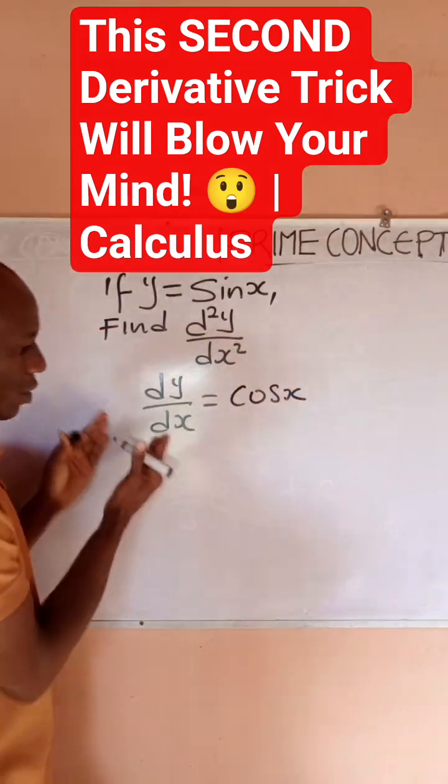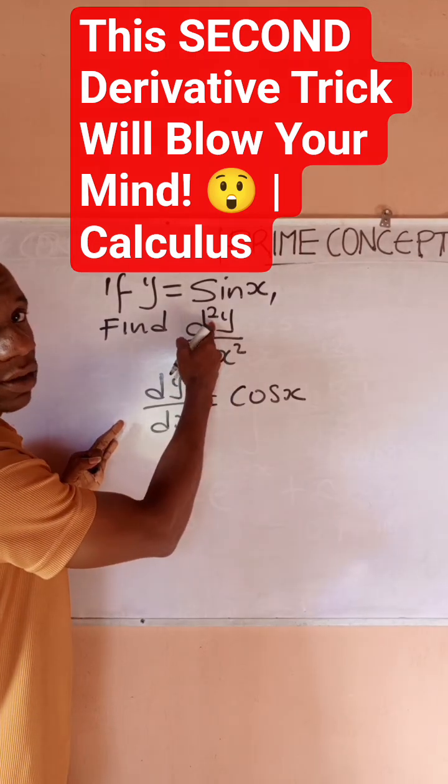If I differentiate sine x, I'll have cos x. Well, this is not where we should stop because they want us to get the second derivative.